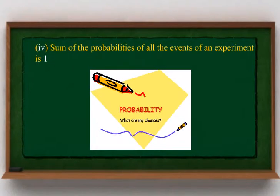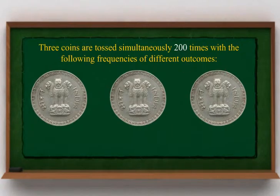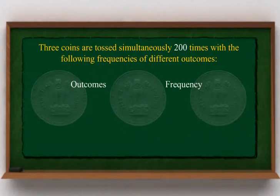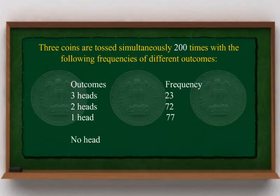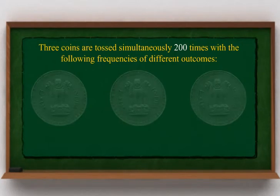The sum of the probabilities of all the events of an experiment is 1. Three coins are tossed simultaneously 200 times with the following frequencies: 3 heads – 23, 2 heads – 72, 1 head – 77, No head – 28. Compute the probability of 2 heads coming up.